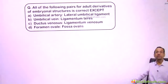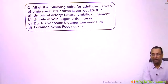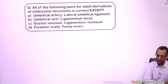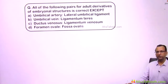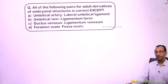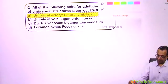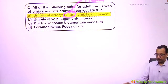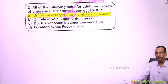Looking at an exam question about wrong pairings: the umbilical artery does not produce the lateral umbilical ligament — it produces the medial umbilical ligament. So it is medial, not lateral. Then who produces the lateral umbilical ligament?